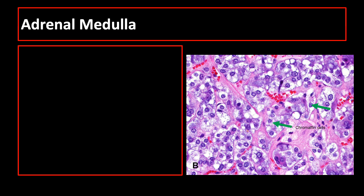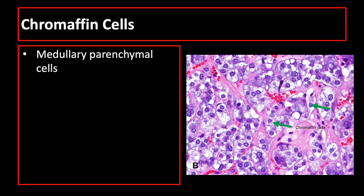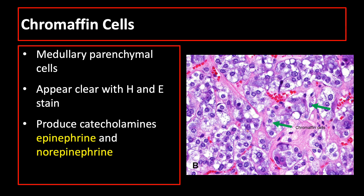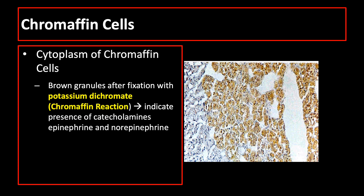The adrenal medulla lies at the center of the adrenal gland and is derived from the neural crest. The cells are large, pale staining polyhedral cells arranged in cords or clumps and supported by a reticular fiber network. These medullary parenchymal cells are called chromaffin cells, which appear clear with hematoxylin and eosin stain. Chromaffin cells produce catecholamines epinephrine and norepinephrine. The cytoplasm of chromaffin cells contains granules that turn brown in color after fixation with potassium dichromate, a reaction called the chromaffin reaction, as indicated in the picture on the right.